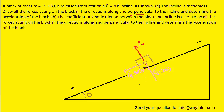For part B, the free body diagram is basically the same. The only addition is kinetic friction. As the block slides down the ramp, kinetic friction opposes that motion, meaning it points up the ramp to slow the acceleration of the block. We label a force pointing up the ramp as Fk, the kinetic frictional force. We then turn to Newton's second law in the x direction to determine the acceleration of this block.